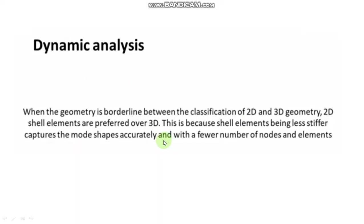For dynamic analysis, when the geometry is borderline between the classification of 2D and 3D geometry, 2D shell elements are preferred over 3D elements. This is because shell elements, being less stiff, capture the mode shapes more accurately with a fewer number of nodes and elements.